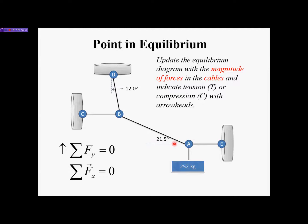When looking at a free body diagram and trying to solve for forces, we need a minimum of one known force and a maximum of two unknowns. We convert the mass into a force, and then use each equilibrium equation to solve for the other two forces. One equilibrium equation solves for one force; the other solves for the other. You cannot use the same equilibrium equation twice for the same FBD — you can only use them one time each per FBD.